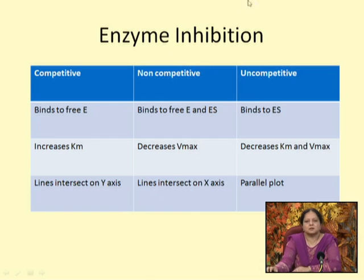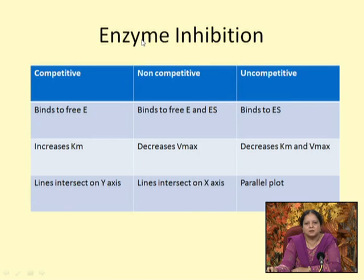Coming to enzyme inhibition kinetics: enzyme inhibitors are broadly classified into two types — reversible and irreversible. Irreversible inhibition follows different kinetics, progressing with time, whereas reversible inhibition varies with inhibitor concentration and reaches equilibrium. For reversible inhibitors, there are three types of complete inhibition that can be discerned: competitive, non-competitive, and uncompetitive.